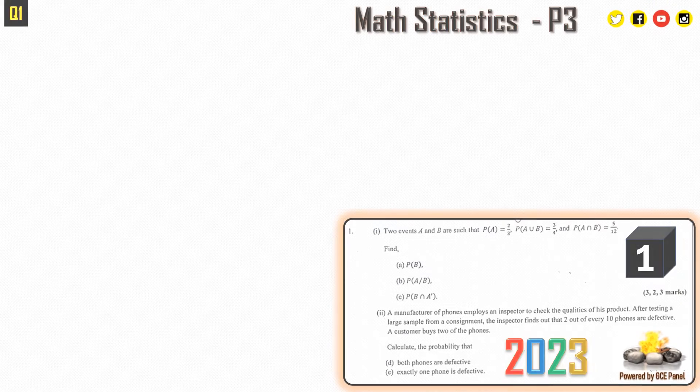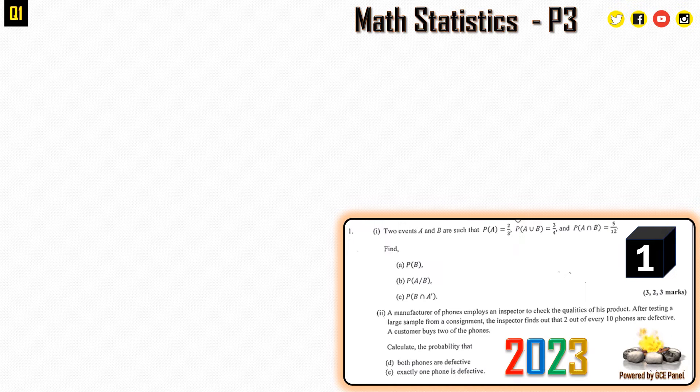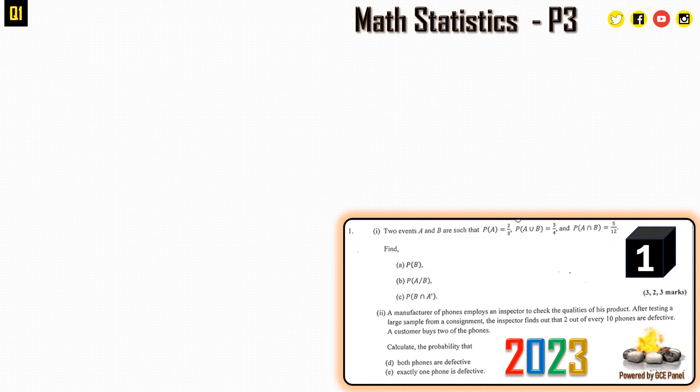Let's take the first question of the day. Two events A and B are such that the probability of A is 2/3, probability of A union B is 3/4, probability of A intersection B is 5/12. Find (a) the probability of B, (b) the probability of A given B, and (c) the probability of B intersection A prime.